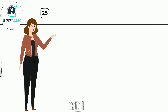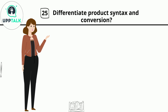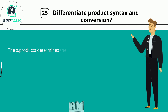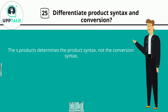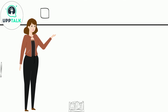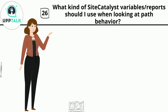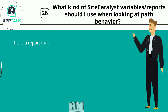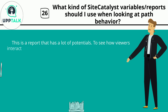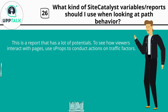Question 25: Differentiate product syntax and conversion. The s.products variable determines the product syntax, not the conversion syntax. Question 26: What kind of Site Catalyst variables or reports should I use when looking at path behavior? This is a report that has a lot of potential. To see how viewers interact with pages, use s.props to conduct actions on traffic factors.